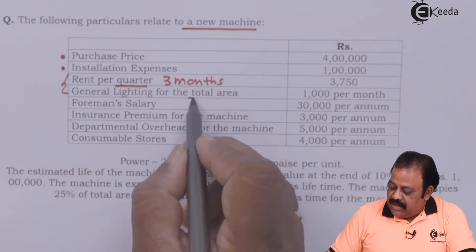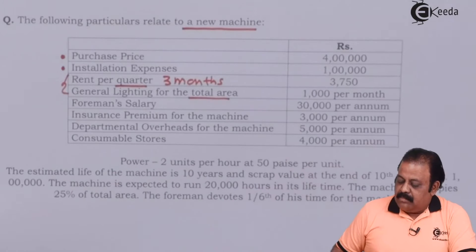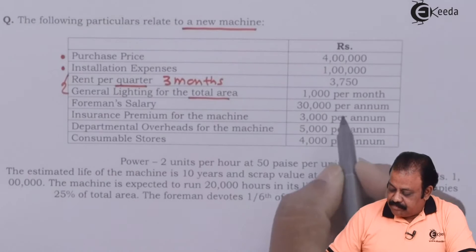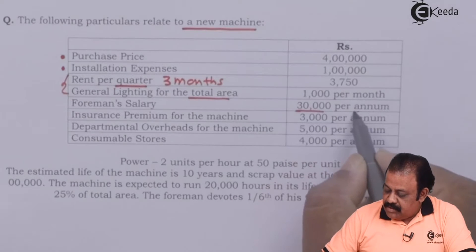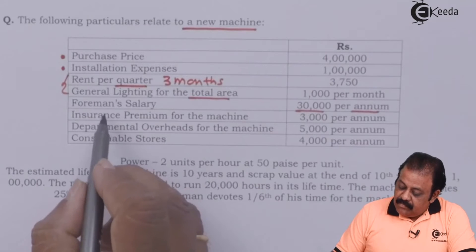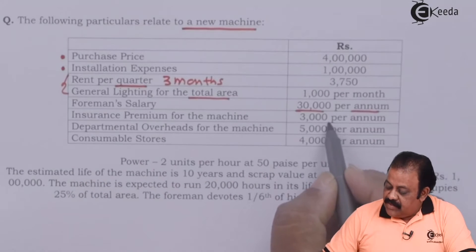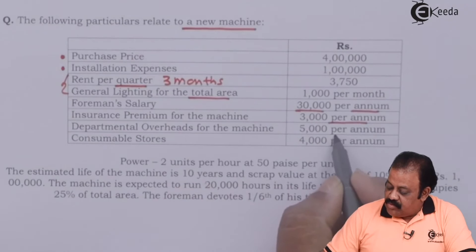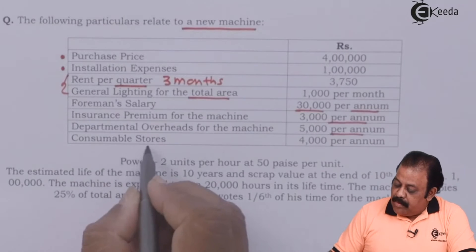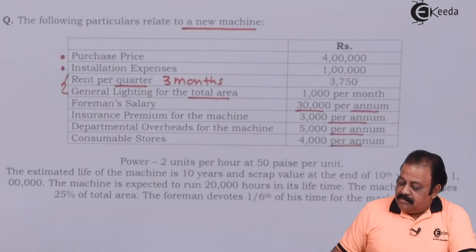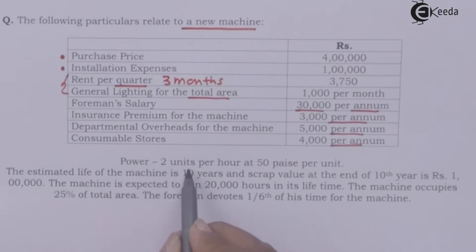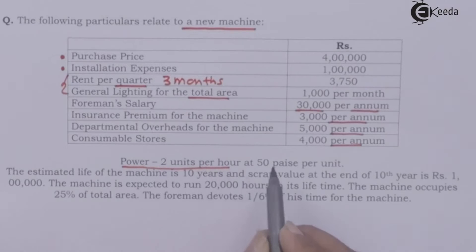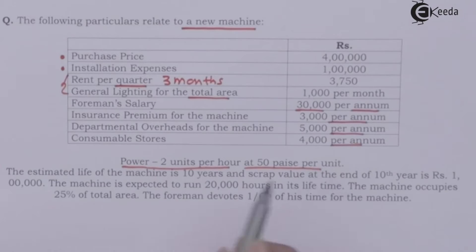General lighting for the total area is 1,000 per month. Foreman salary is 30,000 per annum. Insurance premium for the machine is 3,000 per annum. Departmental overheads for the machine are 5,000 per annum. Consumable stores are 4,000 per annum. Power is 2 units per hour at 50 paise per unit.